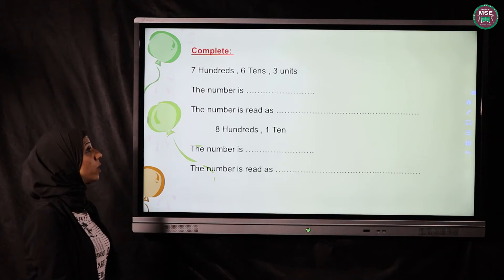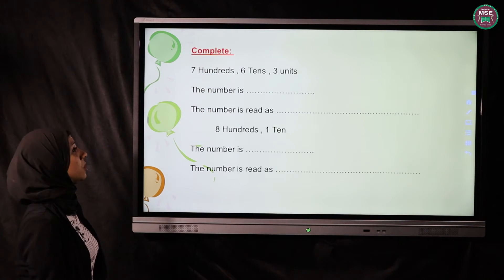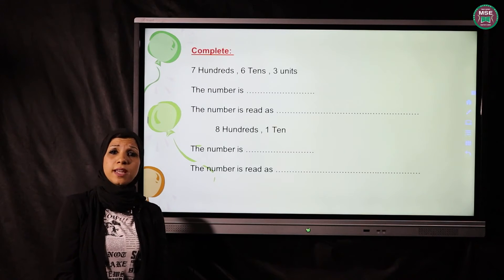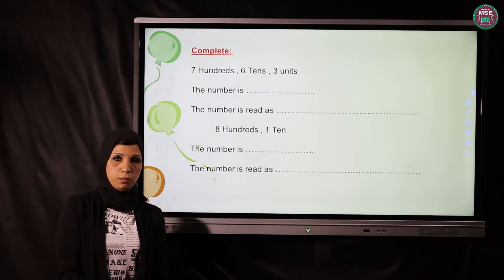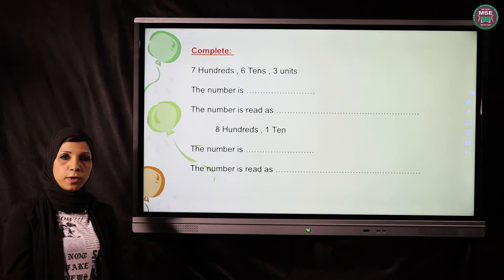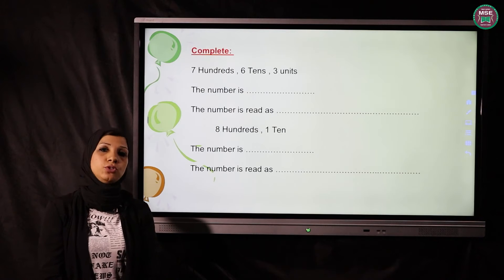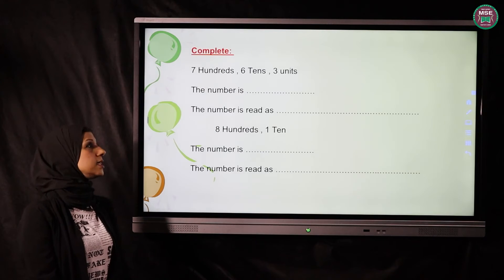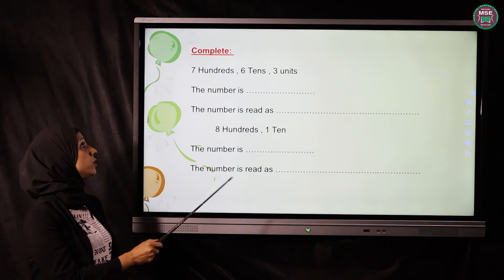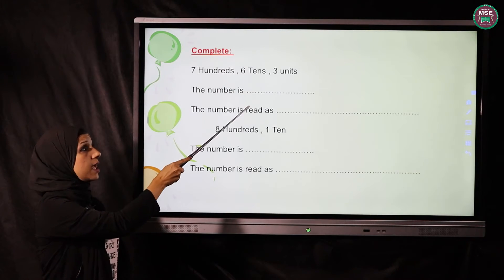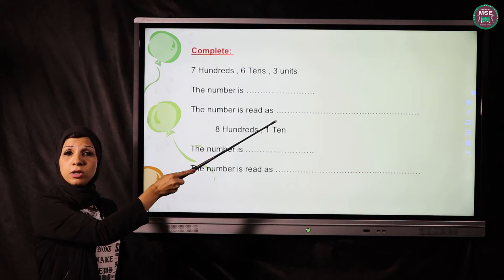Let's see the next exercise. We have a general exercise here: writing the numbers and reading the numbers we took before — how to read and how to write. Let's see our number: 700 hundreds, 61 tens, and 3 units.